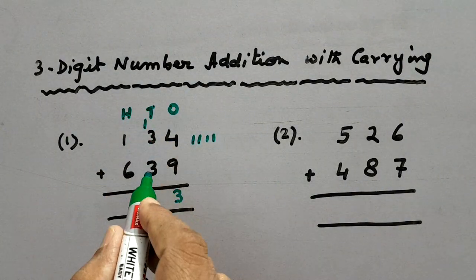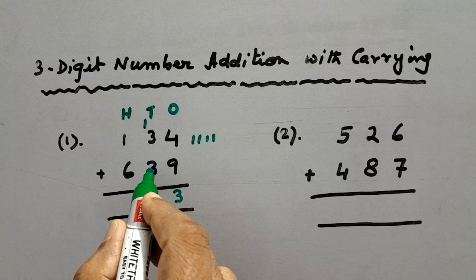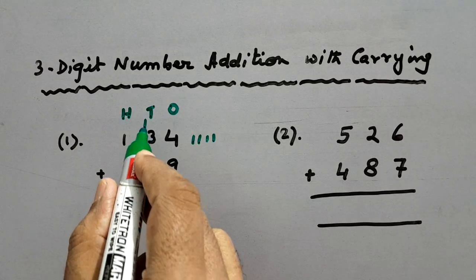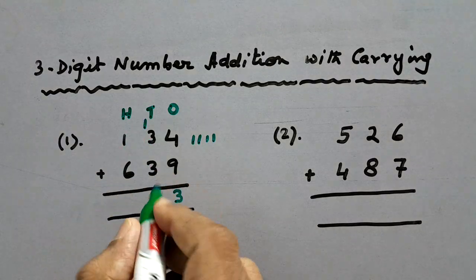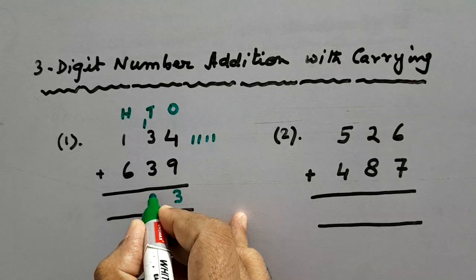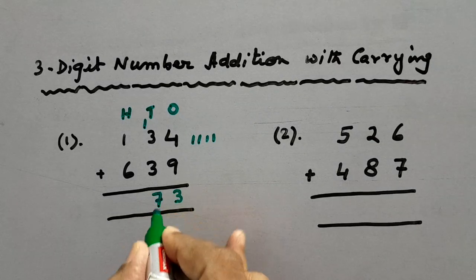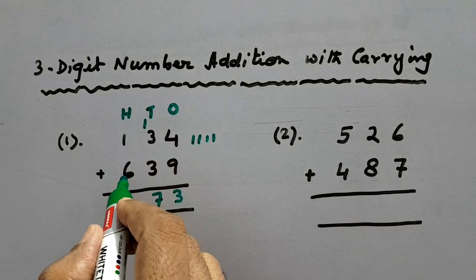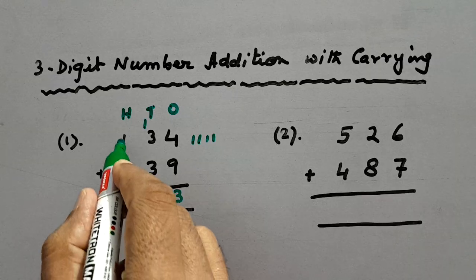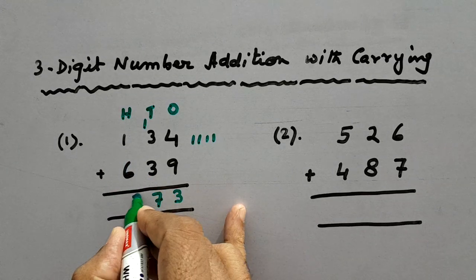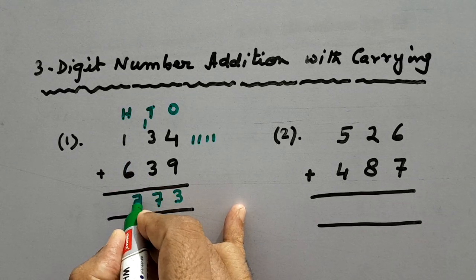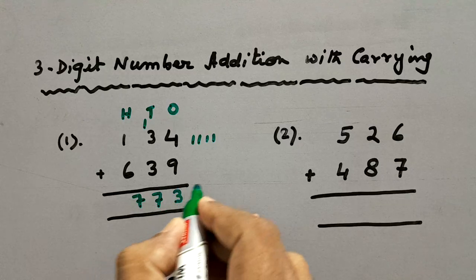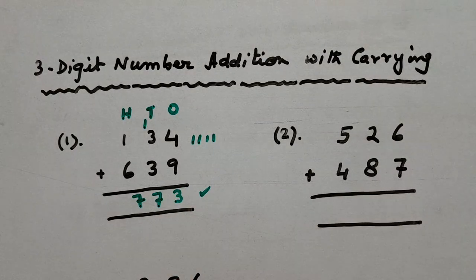Now in the tens column: three tens plus three tens is six tens, plus one ten carried is seven tens. So we'll write seven here. In the hundreds column we have 600 plus 100, so 700. So 773 is the answer of this addition.